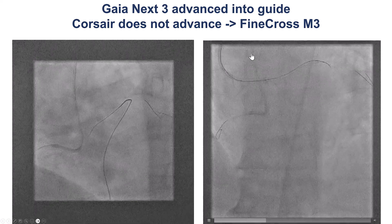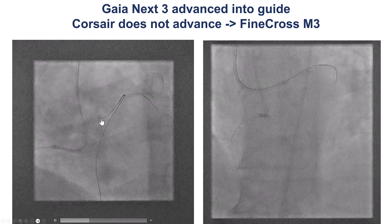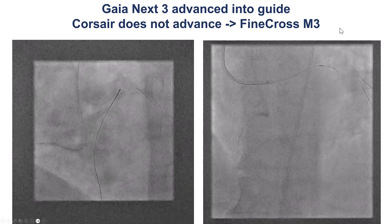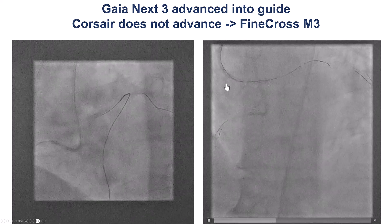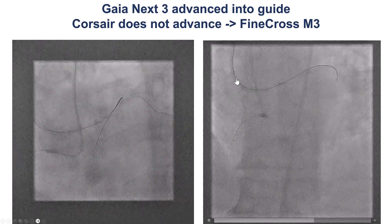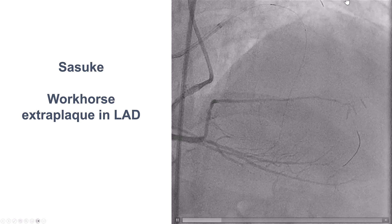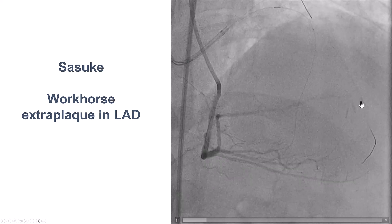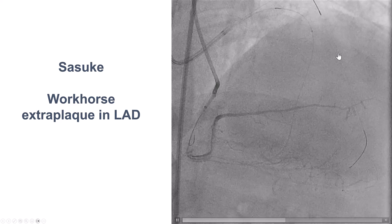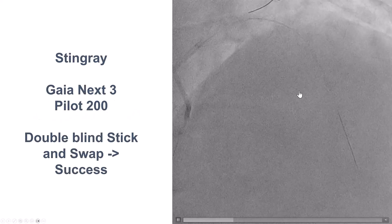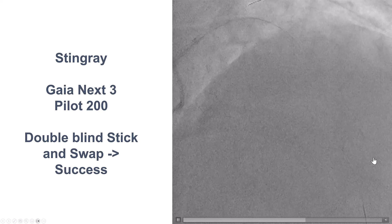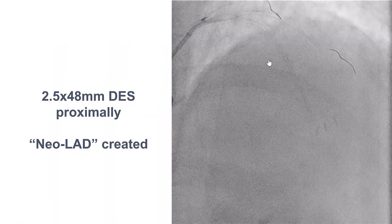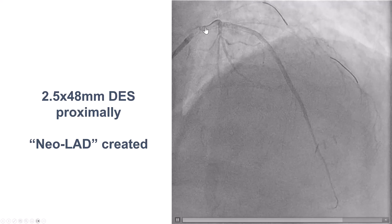We had similar difficulties advancing a microcatheter all the way into the antegrade guide catheter, but eventually we were able to advance a Finecross M3 low-profile microcatheter all the way into the antegrade guide, and then we externalized an R350 wire. We then used a Sasuke dual-lumen microcatheter to try to wire into the LAD, but the wire seemed to be into the extra-plaque space, requiring re-entry. We used the Stingray system with a double blind-stick-and-swap technique, and that advanced in the right location. We pre-dilated and stented with two drug-eluting stents, providing a nice result.